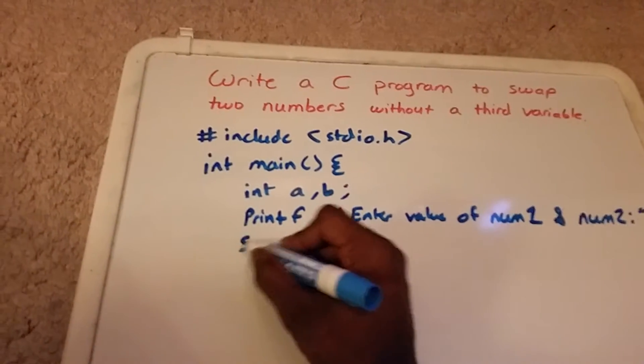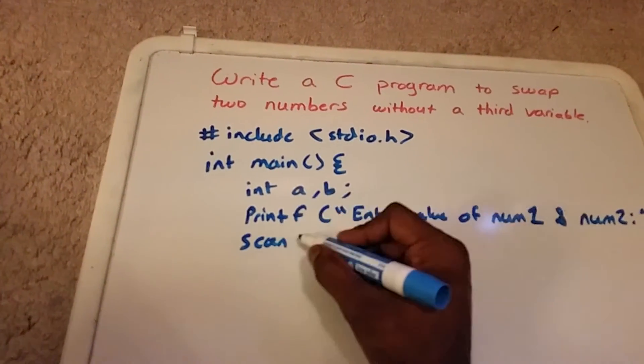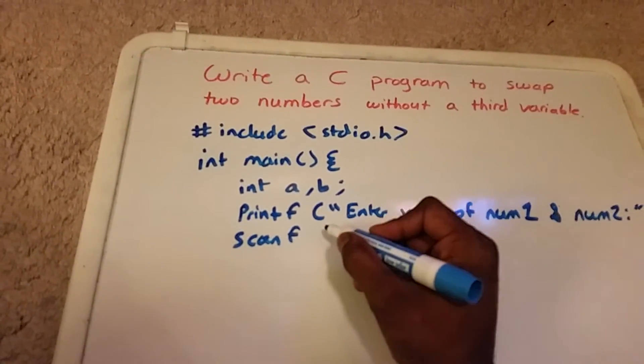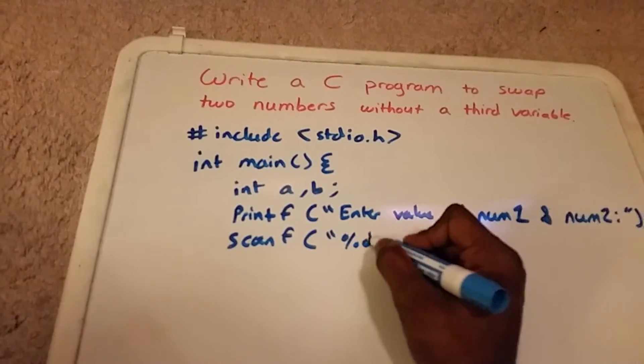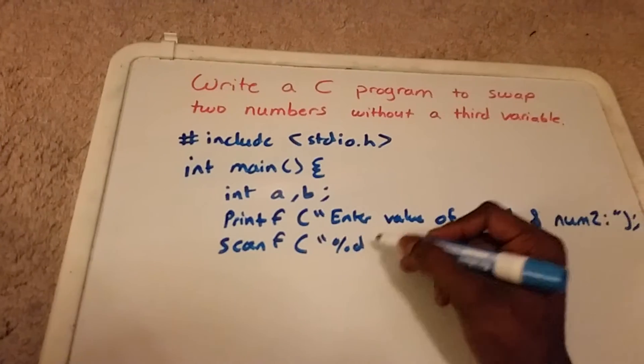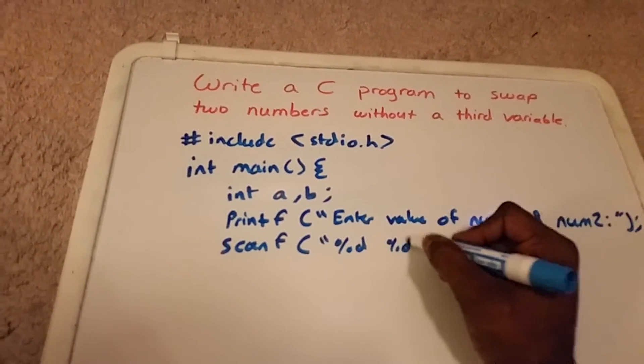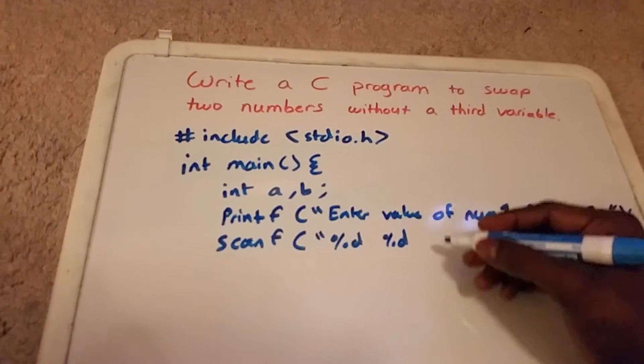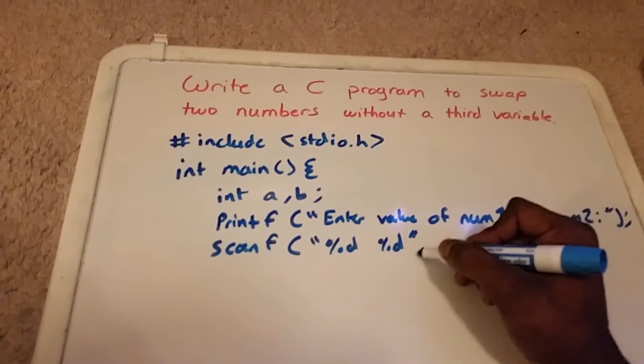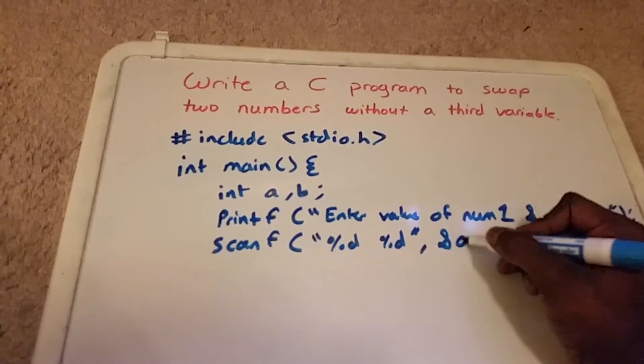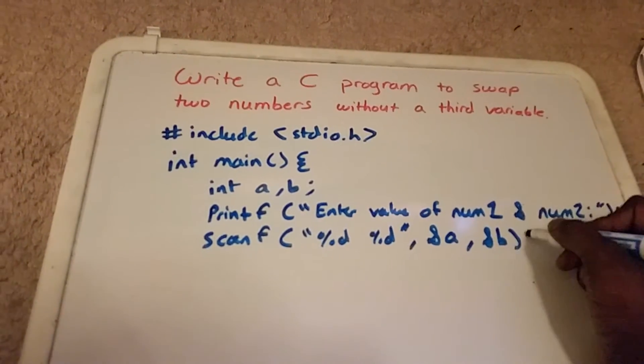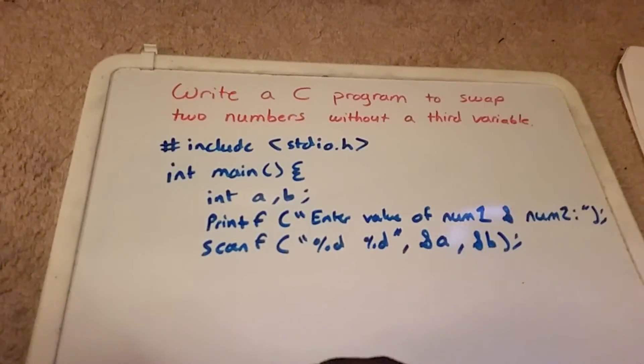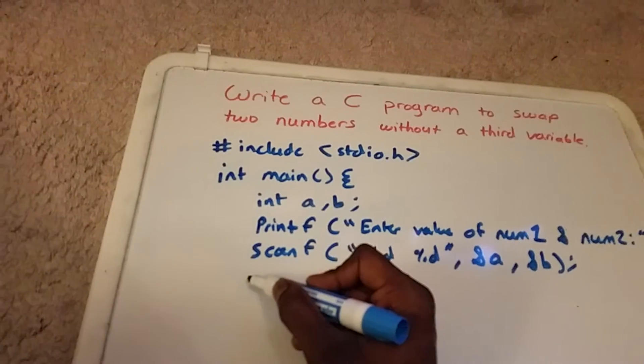Okay, and then we need to scan in these values, so we use the function scanf. So that's one value you're going to be scanning there, another value is going to be scanning there, and we're going to put them in variable a and in variable b. Okay, so now I'm going to write a little comment here, that's where we're going to swap the variables.